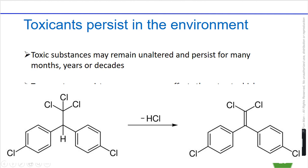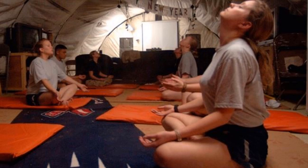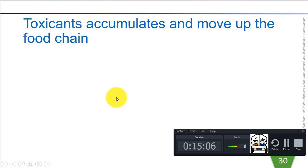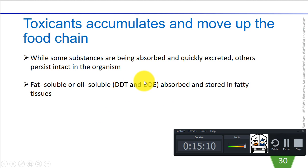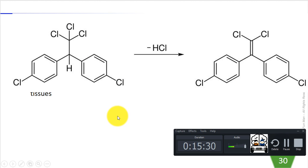Toxicants may also accumulate and move up the food chain. Of the toxic substances that organisms absorb — through breathing, consuming, or drinking — some are excreted in urine or feces, some are degraded into harmless breakdown products, but others persist intact in the body without any alteration. Substances that are fat-soluble or oil-soluble, containing organic compounds like DDT and DDE with benzene ring structures, tend to reside in fatty tissues.